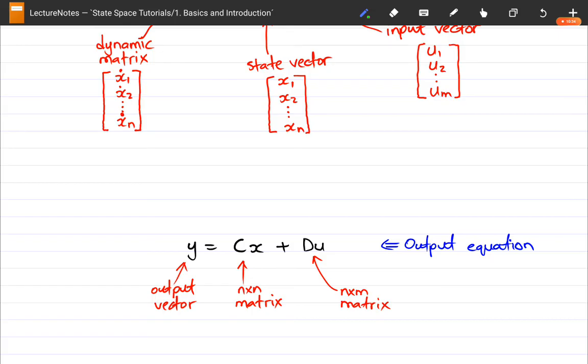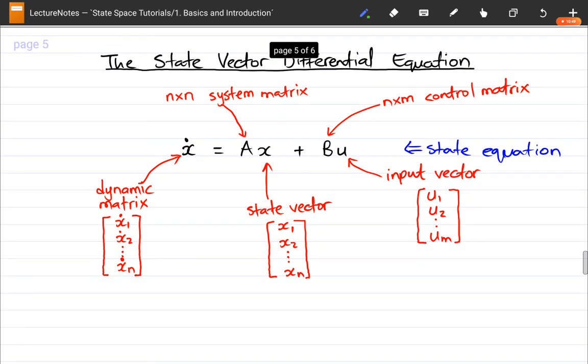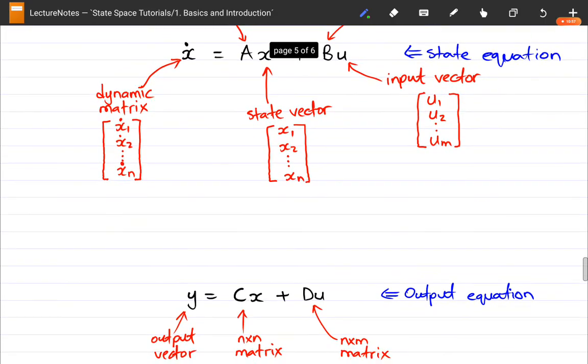This is going to be very important when moving forward, when we try to find the relationship of the output. Sometimes you'll notice when we do some examples, we won't be interested in the output, we will just be interested to find out how the system works. So we'll be focusing a lot on A and its relationship to X and X dot. I hope you can keep that in mind.